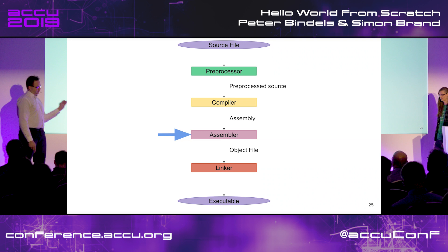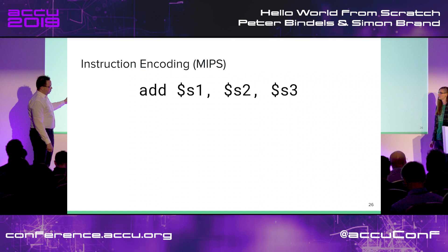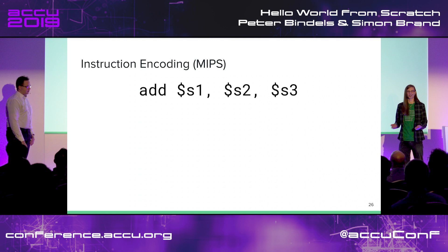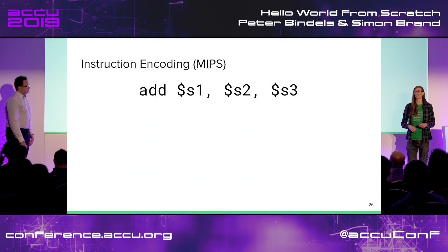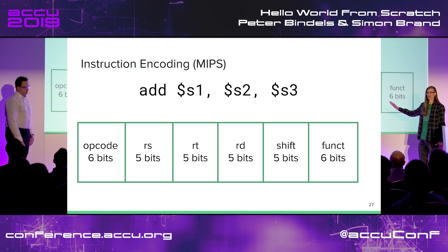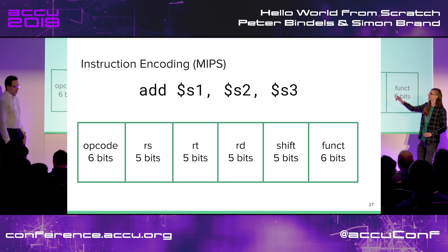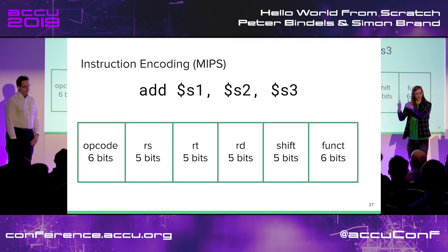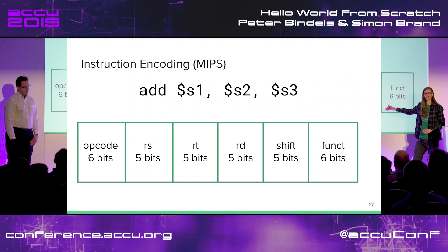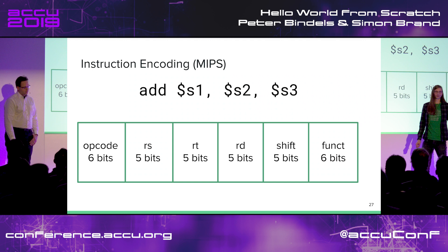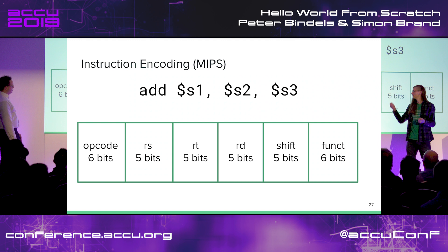Now let's look at the assembler. The assembler takes the assembly we generated and decodes assembly instructions into a binary format for the object file. Here's what a MIPS instruction might look like. MIPS is a RISC architecture — reduced instruction set — so it's quite simple, with few instructions and fairly simple encoding. If we did this for x86, you wouldn't be able to read it because it would be massive and complex, so we're going to stick with MIPS.